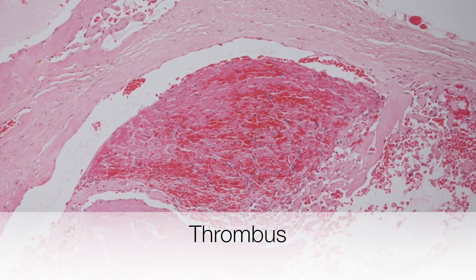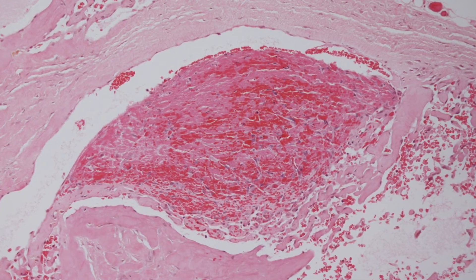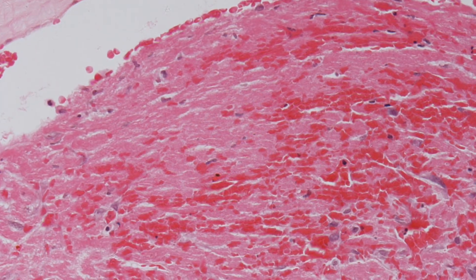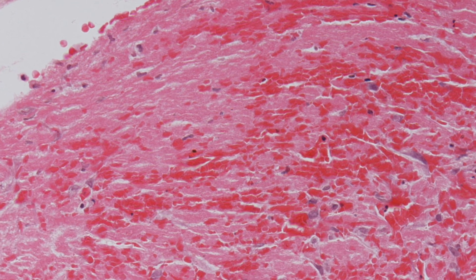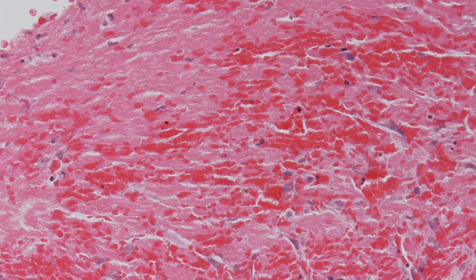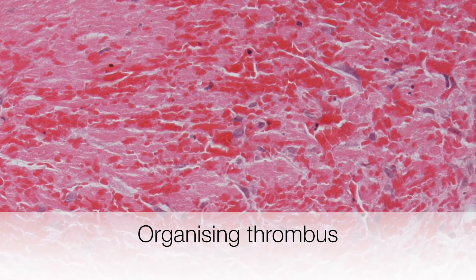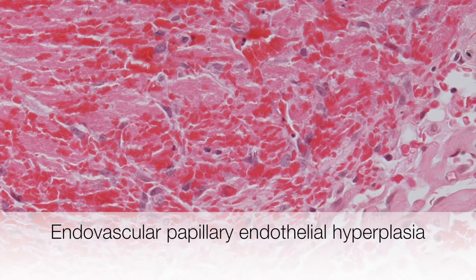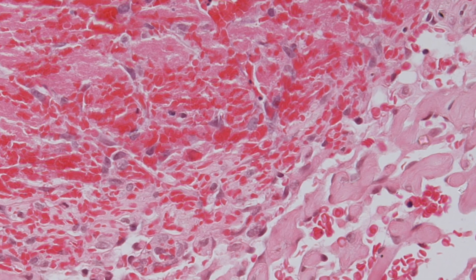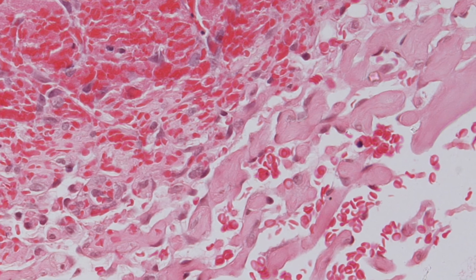In this picture, you can see papillary endothelial hyperplasia arising from a thrombus. On the left side of the picture is thrombus, and as we pan along, the thrombus is gradually organising until finally it forms these papillary hyaline structures covered by endothelium. This confirms the reactive nature of the process and that the lesion is benign.